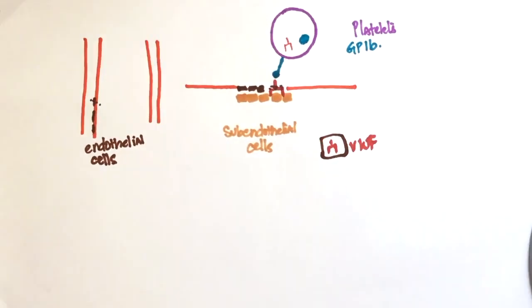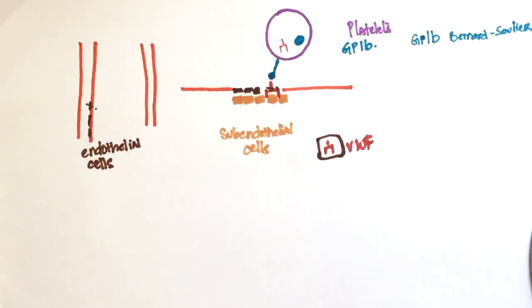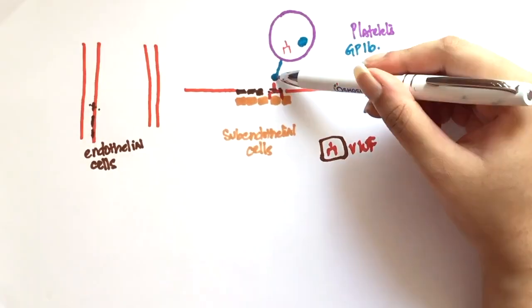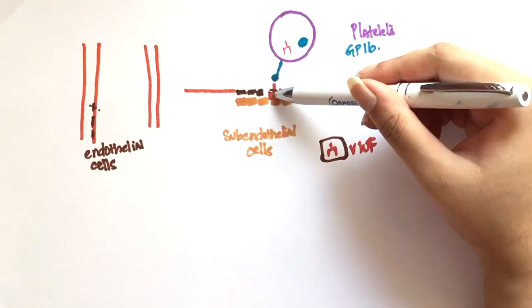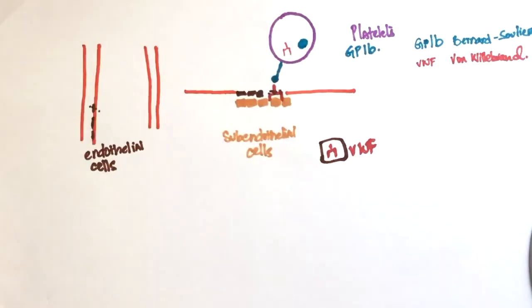An absence of GP1B will lead to Bernard-Soulier syndrome. In this condition, since GP1B is absent, platelets are unable to bind to von Willebrand factor and hence coagulation is difficult. An absence in von Willebrand factor is seen in von Willebrand disease.